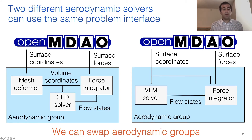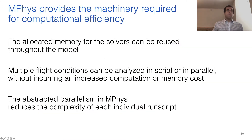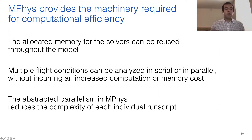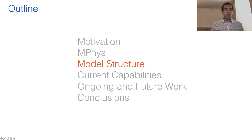As a result of this approach, we can swap aerodynamic groups. mPhys provides the machinery required for computational efficiency — allocated memory for solvers can be reused throughout the model. For example, if you have multiple flight conditions, you can analyze them in serial or in parallel without incurring increased computation or memory cost. The abstracted parallelism in mPhys reduces the complexity of each individual run script.